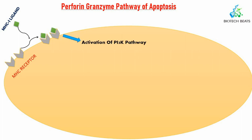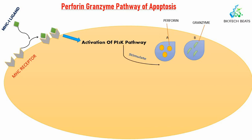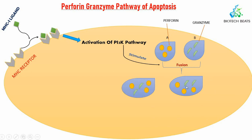The PI3K pathway will be discussed further in signal transduction mechanism pathways. When the MHC class I ligand binds with the receptor, it activates the PI3K pathway, which then stimulates the fusion of two types of vesicles: vesicle A, which stores perforin, and vesicle B, which stores granzyme. This activation stimulates the fusion of these two vesicles.